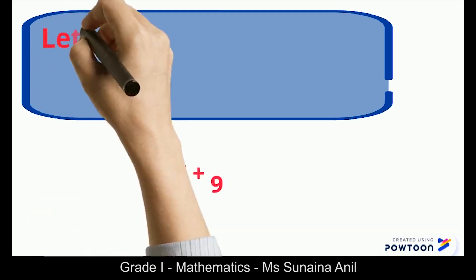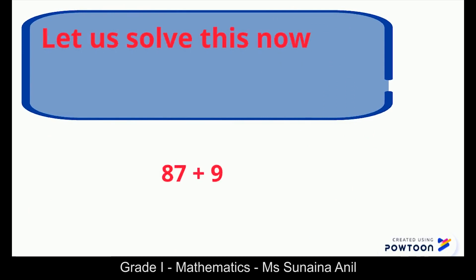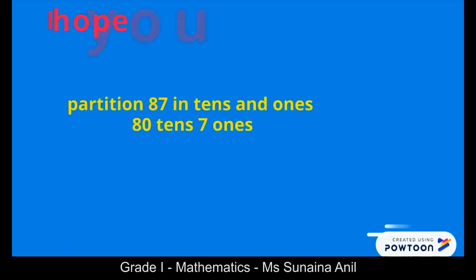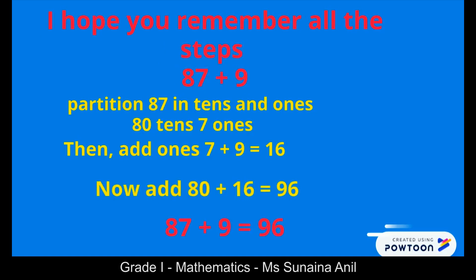Let us solve this now: 87 plus 9. I hope you remember all the steps. Partition 87 in tens and ones — we have 80 tens and 7 ones. Add the ones: 7 plus 9 is 16. Now add 80 plus 16, which is 96. So 87 plus 9 is 96.